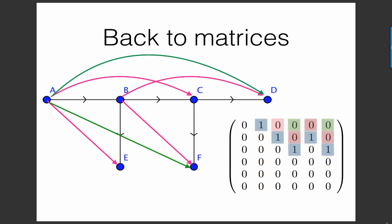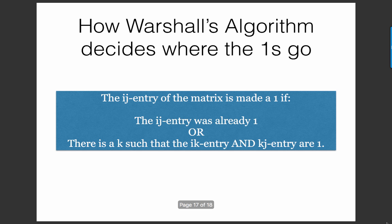So generally speaking, Warshall's algorithm will place a 1 in the ij entry of the adjacency matrix. If one of two things is true, either the ij entry was already a 1, or there is some linking position k, such that both the ik entry is a 1 and the kj entry is a 1.